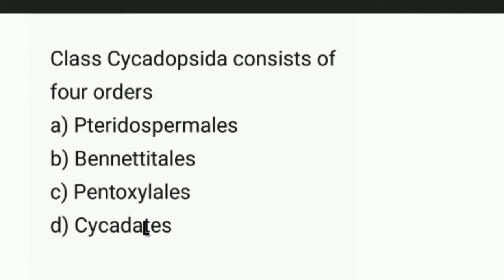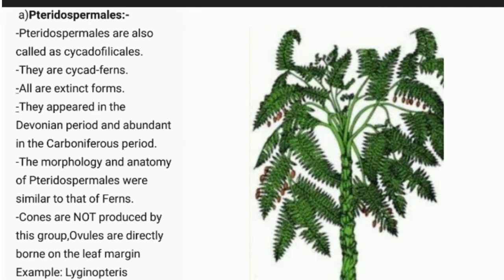Class Cycadopsida consists of four orders: Pteridospermales, Bennettitales, Pentoxylales, and Cycadales. The first order is Pteridospermales, also called Cycadofilicids — they are cycad ferns, whose leaves are similar to ferns.